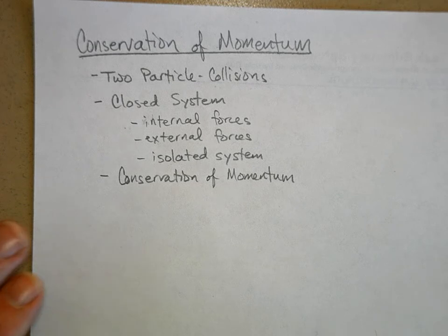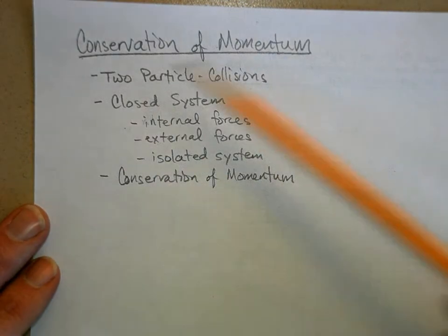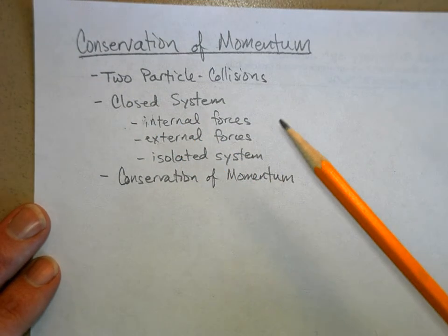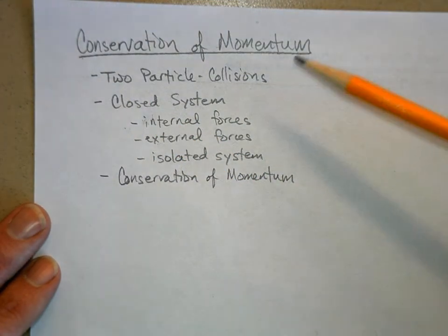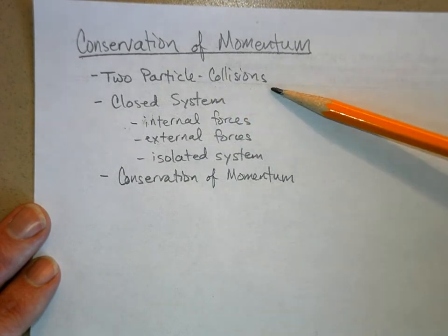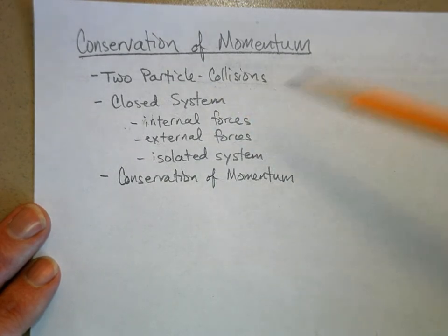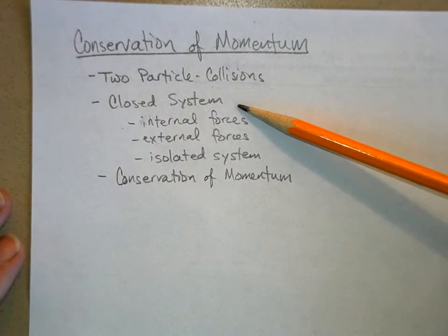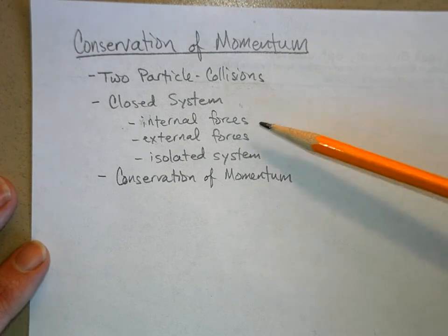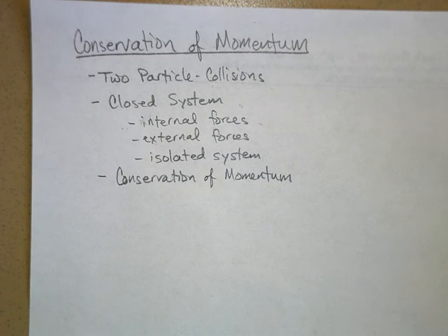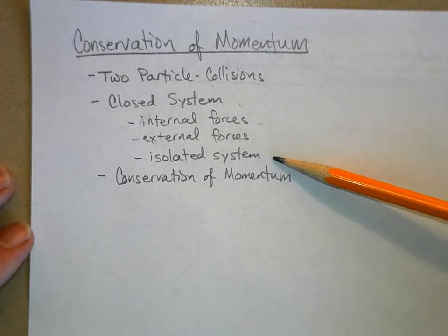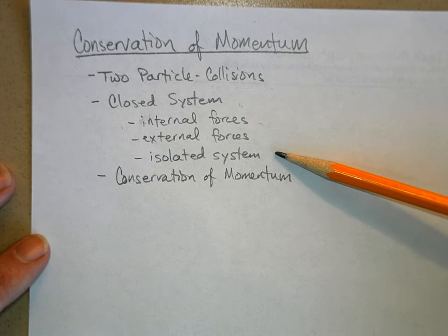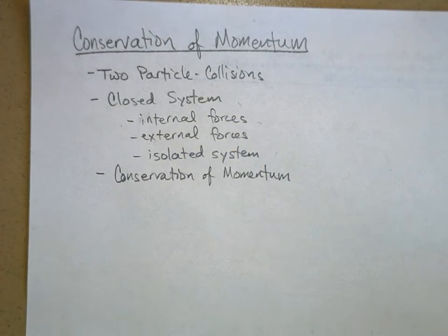We're going to talk about collisions — something many of you have experienced out there in the parking lot. We'll look at two-particle collisions, that's two objects smacking into each other. Then we'll do some definitions: what a closed system is, the difference between an internal force and an external force, and finally we'll define what an isolated system is, and use these ideas to state conservation of momentum.